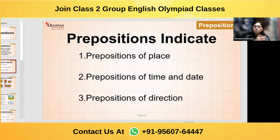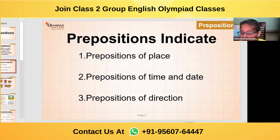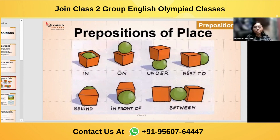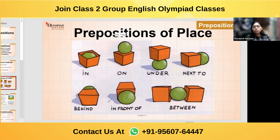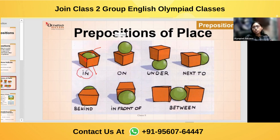What is preposition of place — can you tell me? Yes, Krishna. Preposition of place means the prepositions which define the place of any object. Preposition of place uses words like in, on, under, next to, behind, in front of, or between. For example, there is a ball and a box — what is the relation between ball and box? The ball is in the box. So 'in' is showing the place — that is preposition of place.